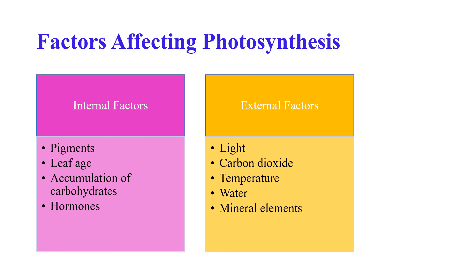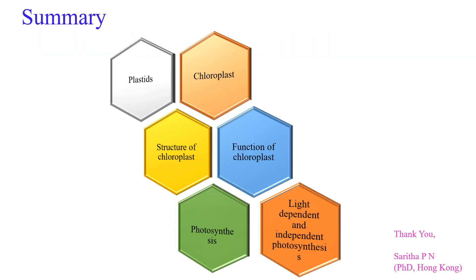Now let us see what are the factors affecting photosynthesis. Photosynthesis depends on internal factors such as pigments, leaf age, accumulation of carbohydrates, and hormones in the plant. External factors such as light, carbon dioxide, temperature, water, and mineral elements also play an important role in photosynthesis.